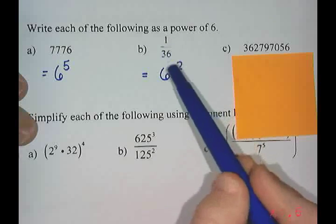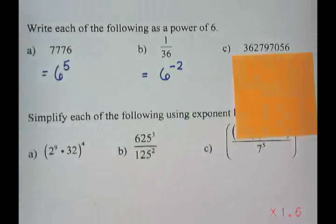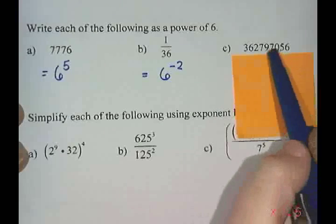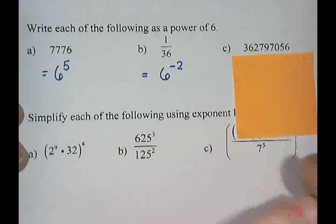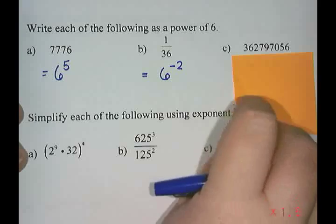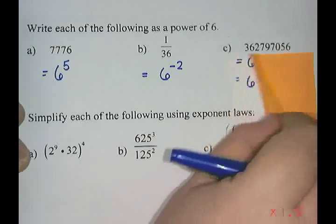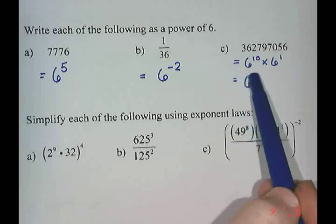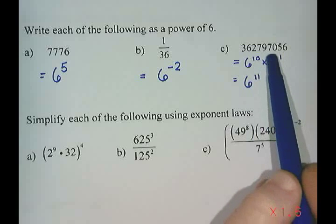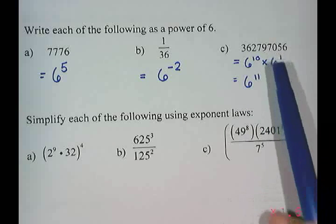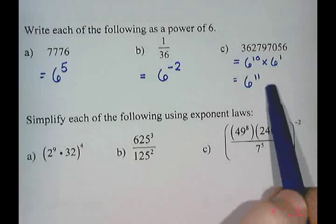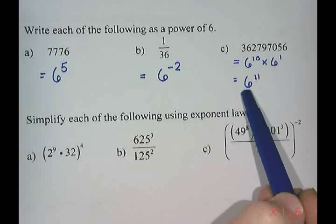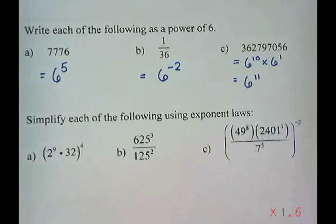To get that fraction, it needs to be a negative two. The last one, 362,797,056 — I used the power sheet, and the largest entry was six to the power of 10. Dividing by six to the power of 10, I had six left over, which is six to the one. Adding the two exponents gives six to the power of 11.